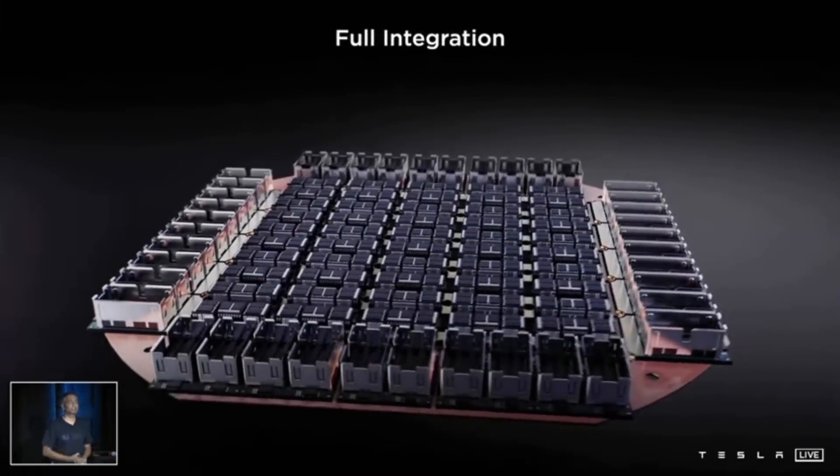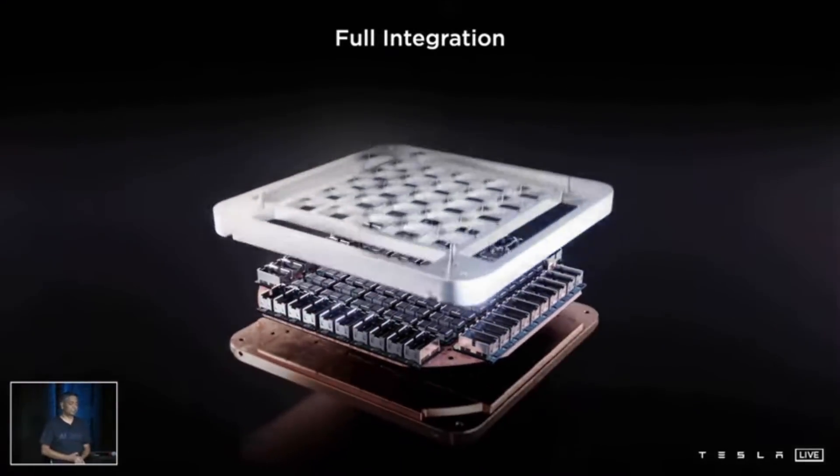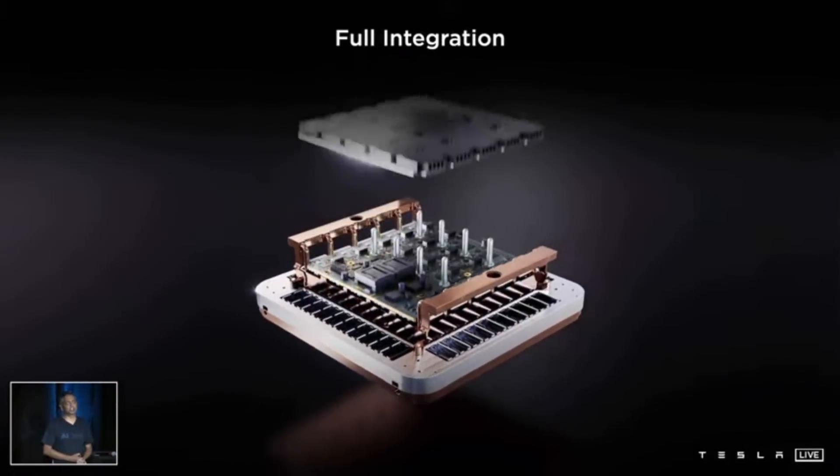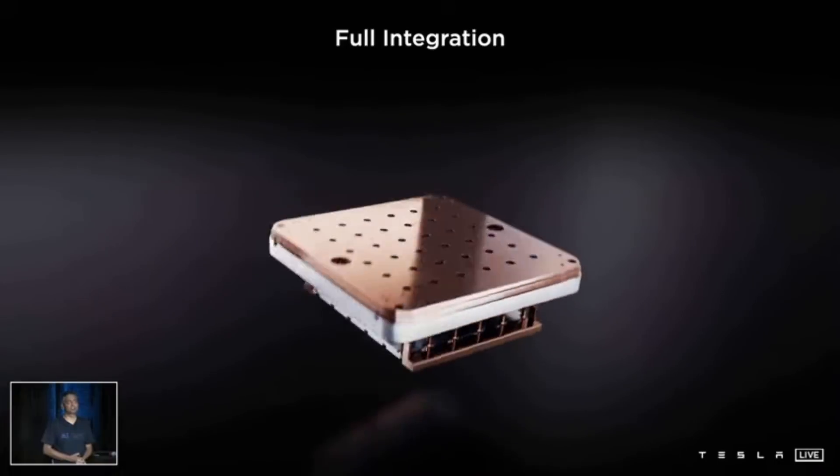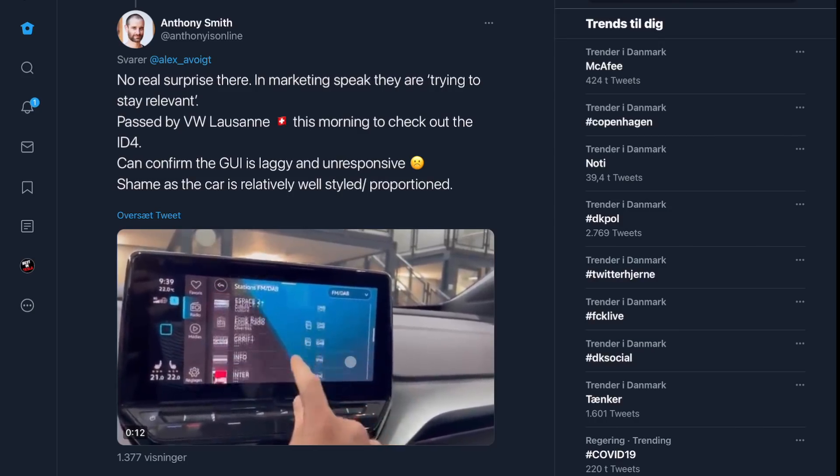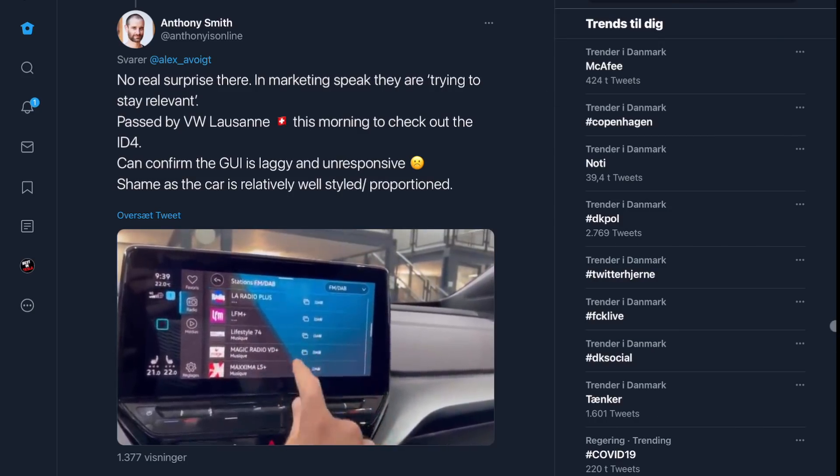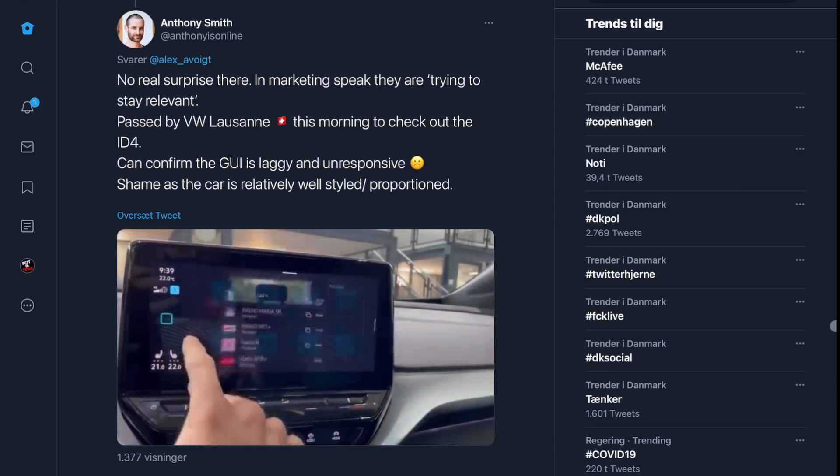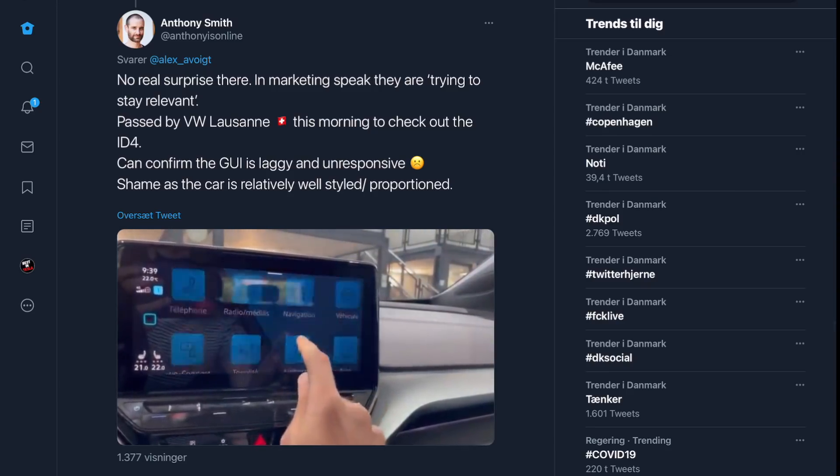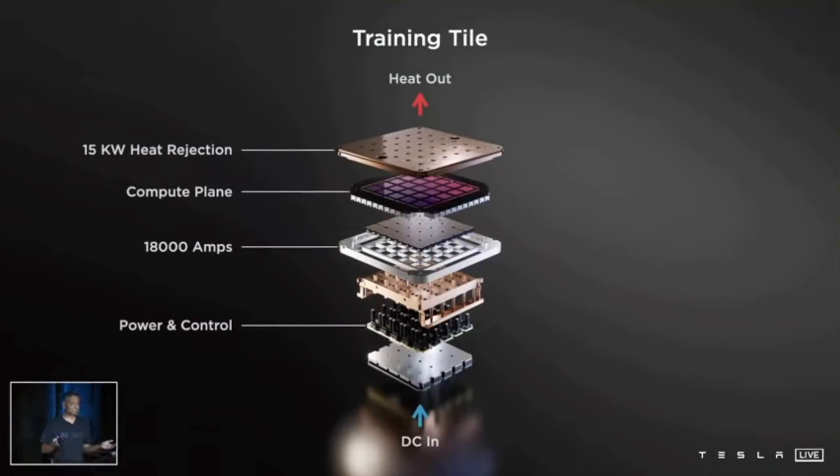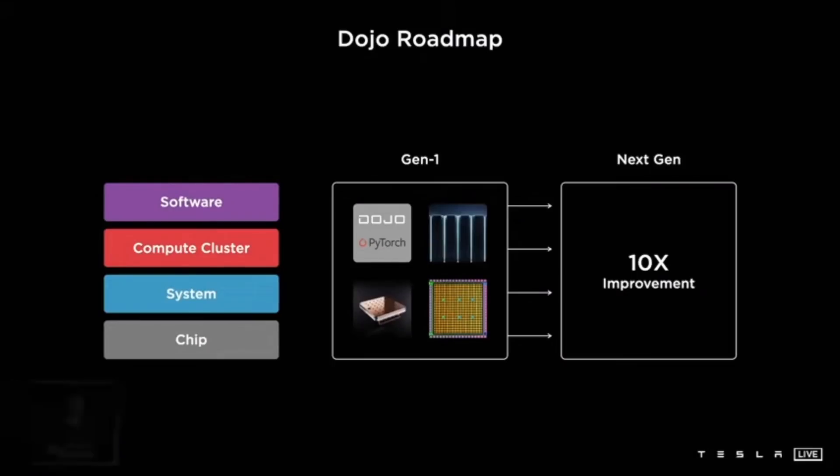There is just Tesla and no one else. No other car company can do this kind of stuff. Volkswagen can't even get their car's software to work properly or do a real over-the-air update. And it is not even themselves that is writing that software. And Tesla thinks they can even improve the Dojo computer to be ten times faster in the future. This is just mind-boggling.